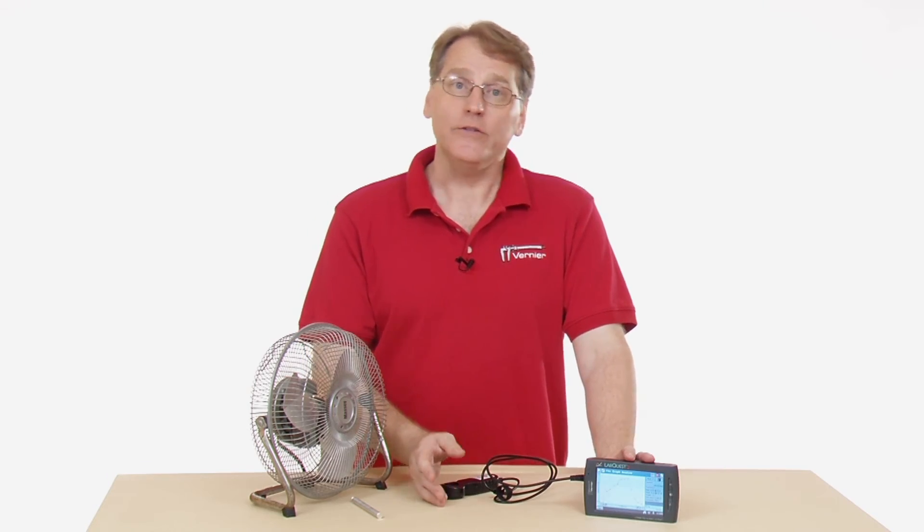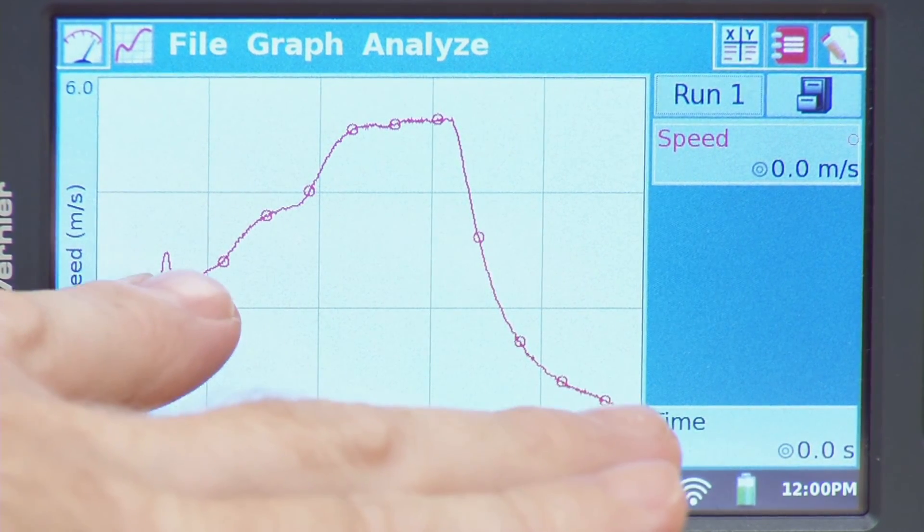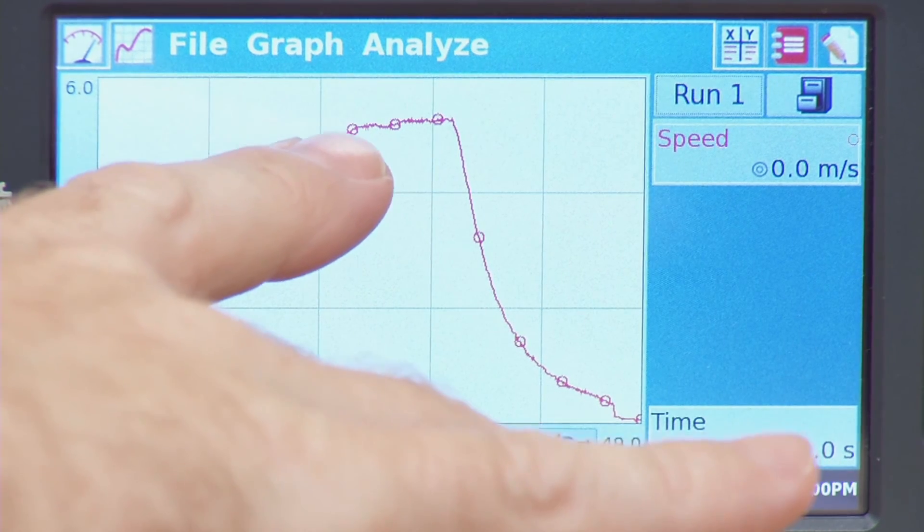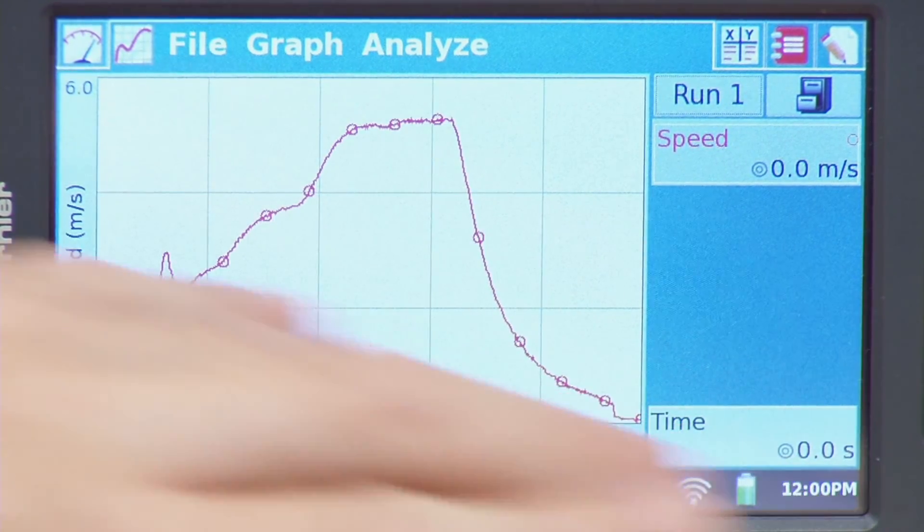So now we have some data to analyze. We see that as we turned on the fan, the wind velocity began to increase, and then finally we got it to where it leveled off, and then when we turned it off, the wind speed decreased.